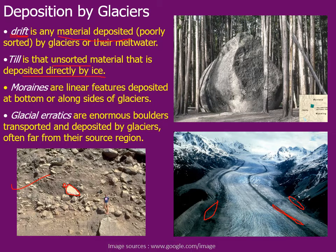When these tills — these unsorted mixtures of rock fragments — are deposited in a linear feature, in a linear manner, they are known as moraines, as you can see in this picture. Here you can see this black-colored linear deposition of the tills — these are known as glacial moraines.